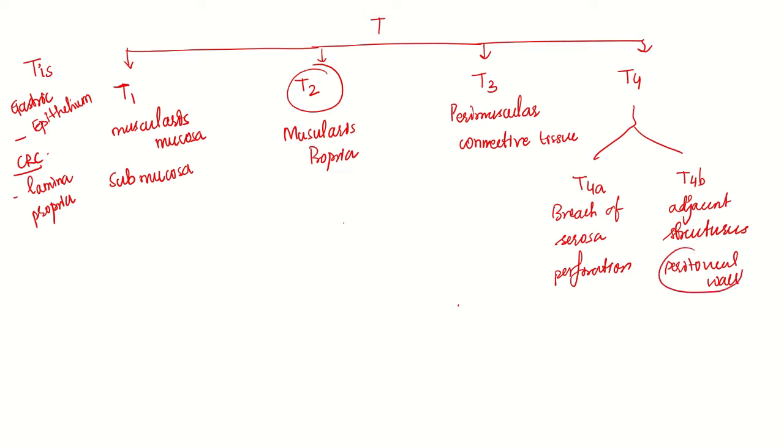Adjacent structures include retroperitoneum, kidney, ureters.